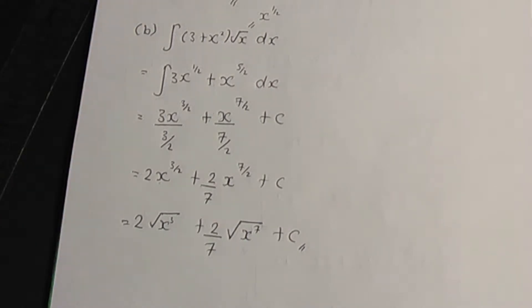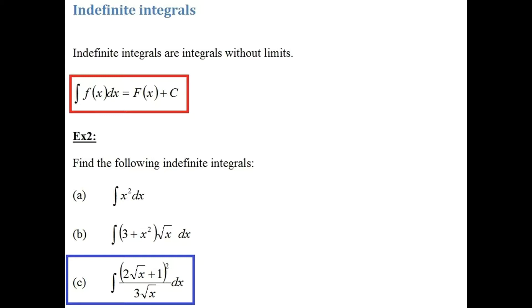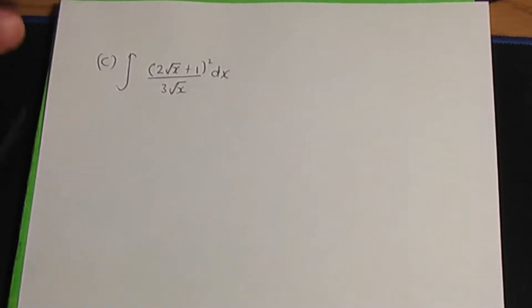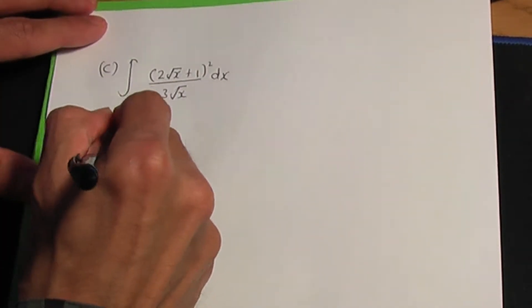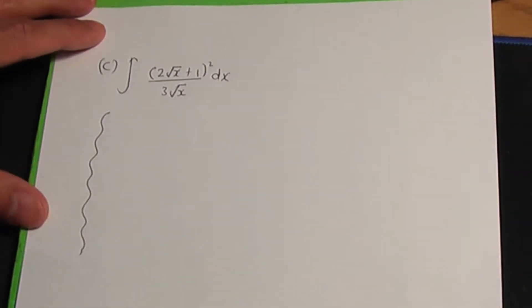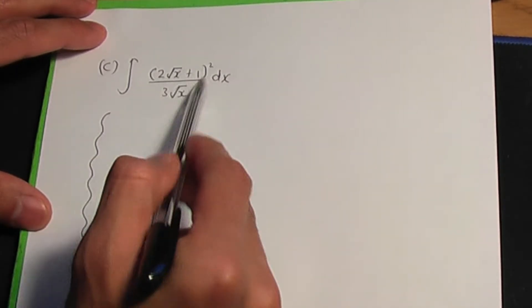We have another example. In part c, we need to integrate 2 root x plus 1 squared, divided by 3 root x. Before we integrate, I'm going to do a side calculation and simplify this fraction.